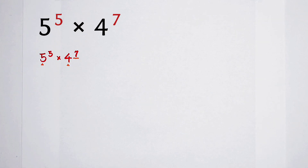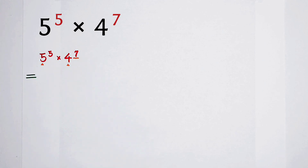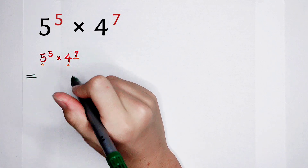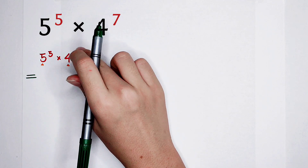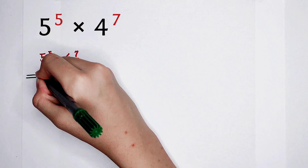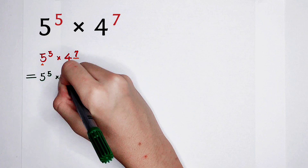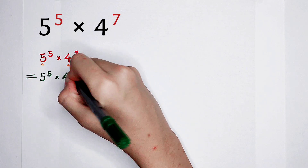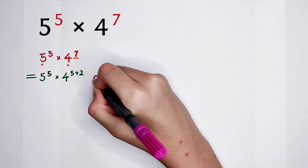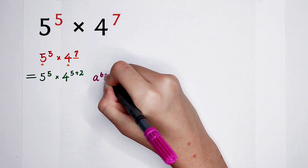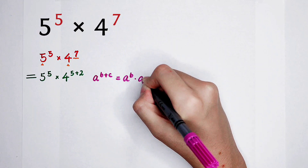We have done the two-step thinking — now let's solve it. The first step: I want to separate the 5 from the exponent 7. So I just write the 7 as 5 plus 2. I have a formula: a to the power b plus c is equal to a to the power b, then times a to the power c.